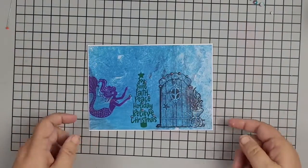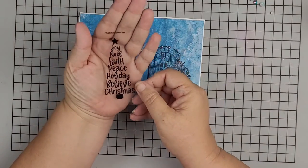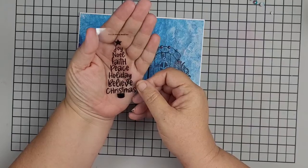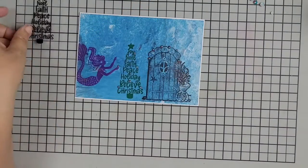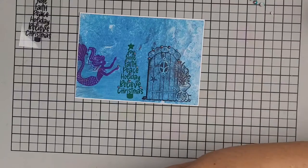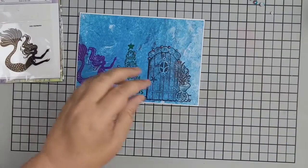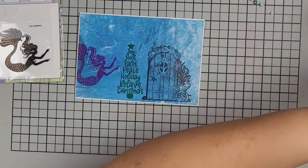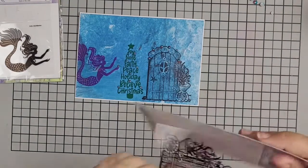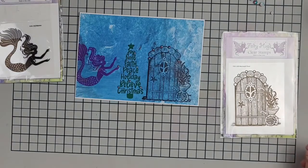All links will be in the description box below. And again, for today's project, I used the tree, which is the Holiday Word Tree, FHS236. I used, excuse me, FHS150 Marina, and FHS148, the Mermaid Door. Thank you for watching, and have a crafty day.